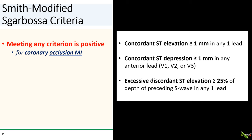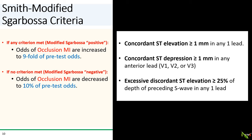The first two criteria are similar to the original Sgarbossa criteria. The third one is different. There is no point system assigned, meaning any of the criteria is considered to be positive. And unlike the original Sgarbossa, we're talking about positive for coronary occlusion MI.